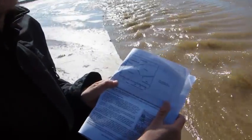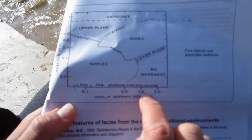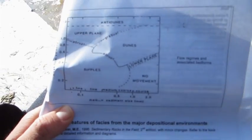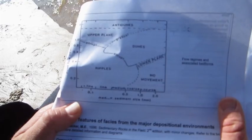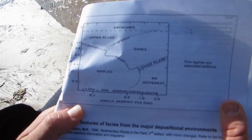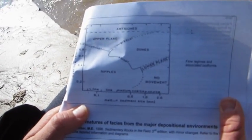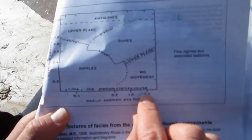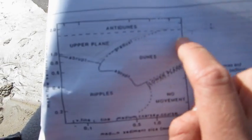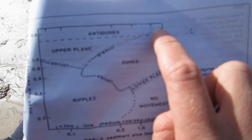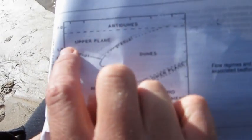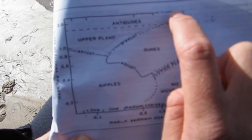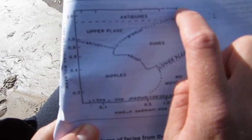Observing the flow regime diagram, we can see that the grain size located here is 1.5 millimetres median and the velocity is 2 metres per second. There is the sediment size and there is the velocity. By cross-referencing, we can see that this is beyond the supercritical point and should form anti-dunes.